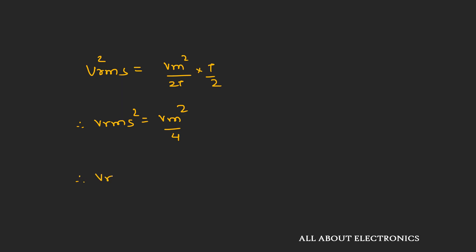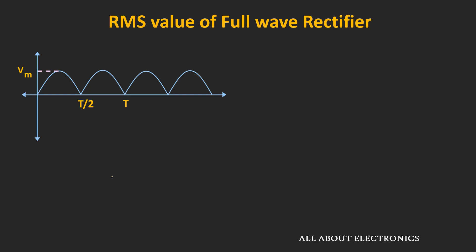Therefore, the RMS value for the half-wave rectifier is equal to Vm/2. In this way, we can find the RMS value for the half-wave rectifier. Similarly, now let's find out the RMS value for the full-wave rectifier.